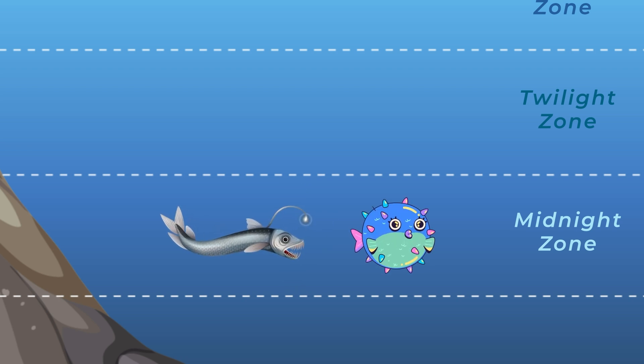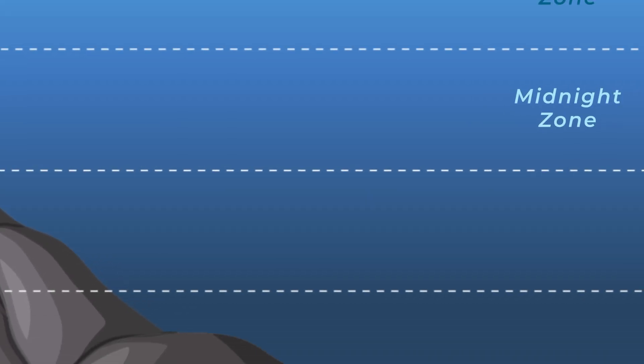Now let's dive even deeper to a place called the abyss. Sounds spooky, right? This zone starts at 4000 meters and goes all the way down to 6000 meters. Here the ocean is pitch black, icy cold, and the pressure is super strong. It's a really tough place to live, but some creatures have found amazing ways to survive.